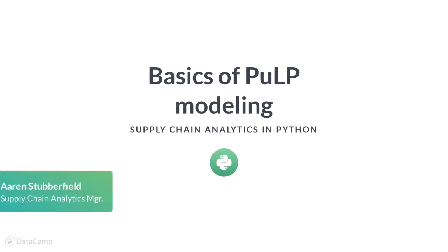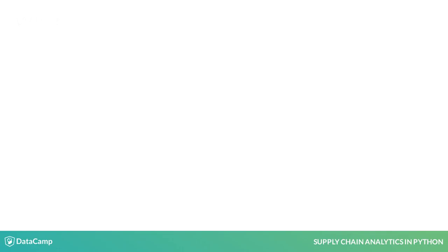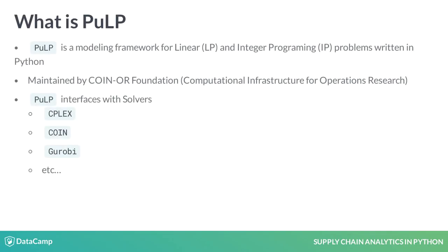In this lesson, we discuss IP and LP modeling in PULP. This course will focus on using the Python PULP library. It is a framework for linear and integer programming problems. The library is maintained by the COIN-OR foundation. PULP models the problems in Python, but relies on a solver to compute a solution. It works with many different solvers.